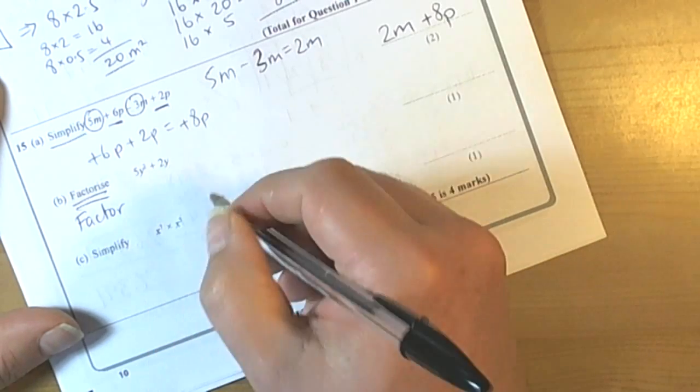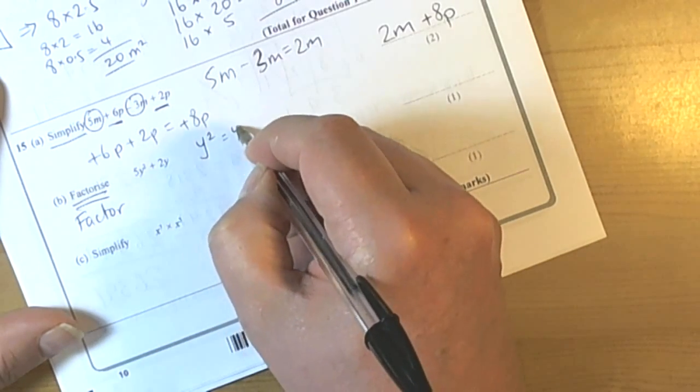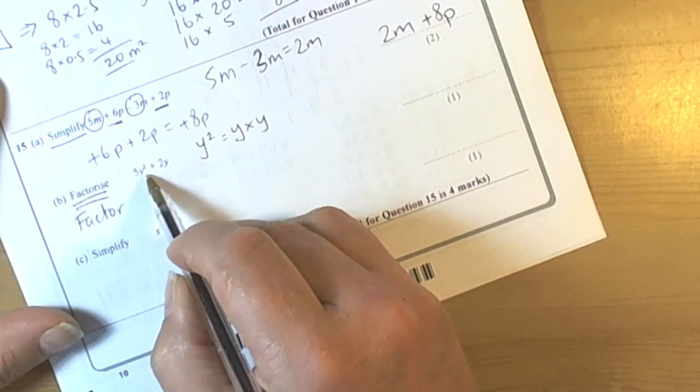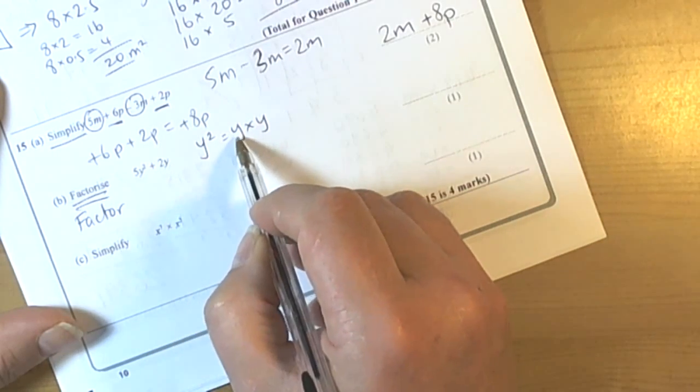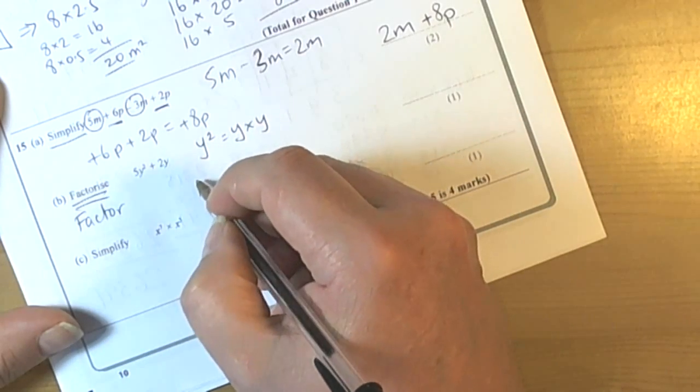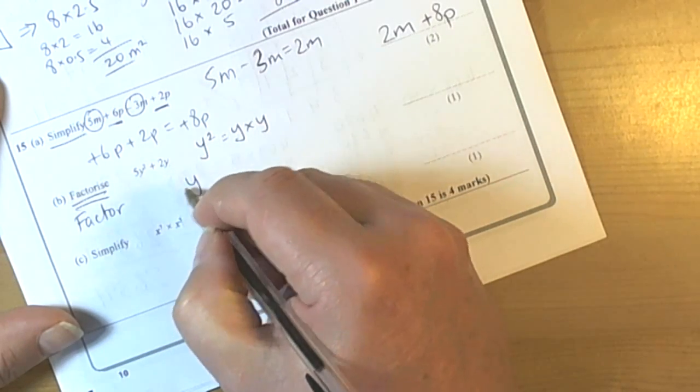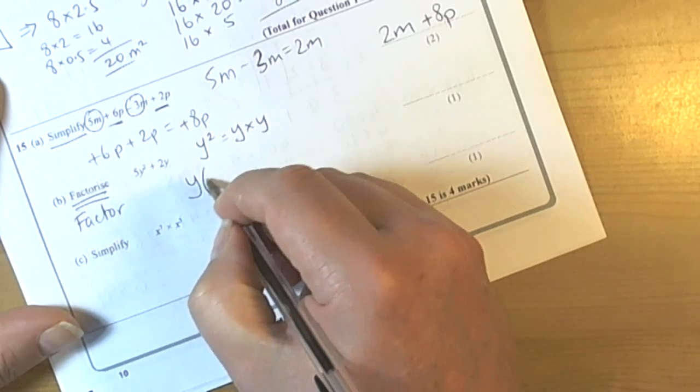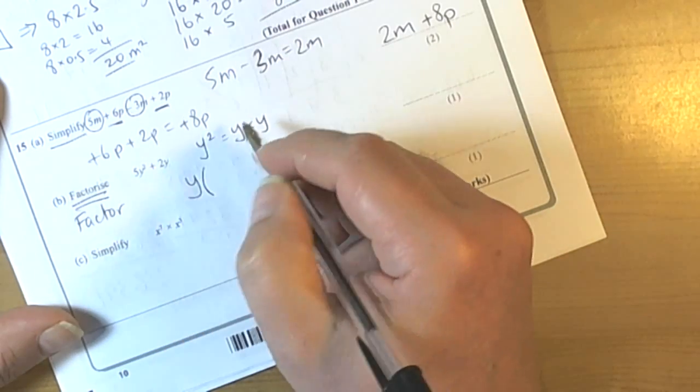But when we look at the letters, we've got Y squared, which means Y times Y, and then we've got a Y, so there's a common factor of Y in both terms. The idea of factorizing is that you put the highest common factor outside a bracket. Factorize means put the expression into brackets.